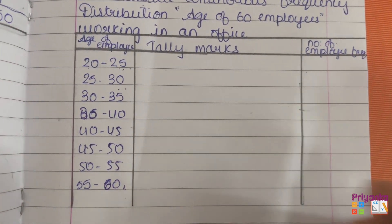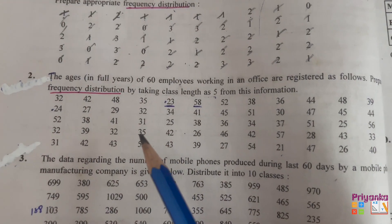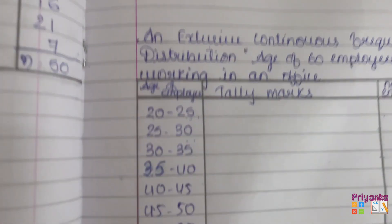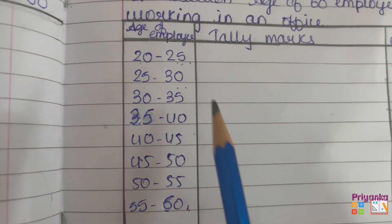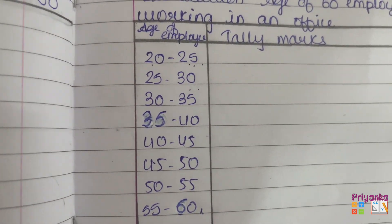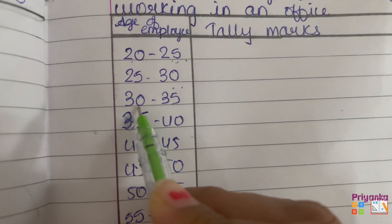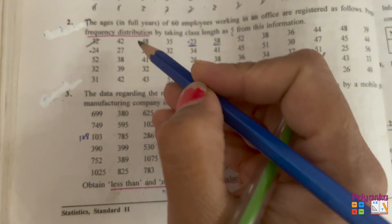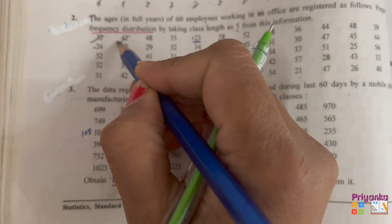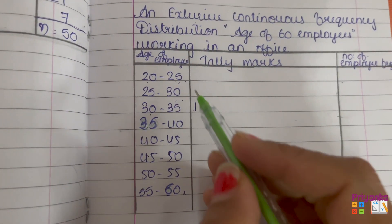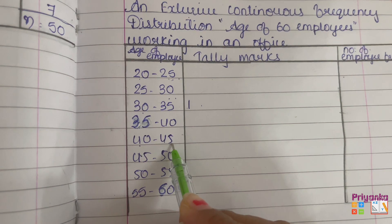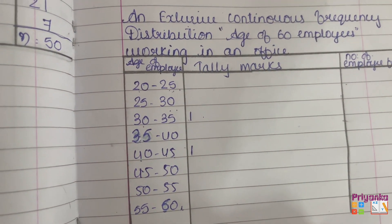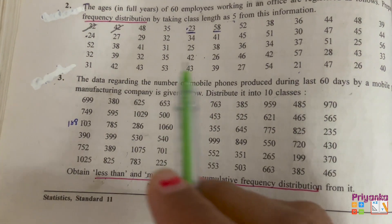Now we start the tally marking. The first number is 32. We find which class it belongs to — 32 falls between 30 and 35, so we place a mark there. The next number is 42, which falls in the class 40 to 45, so we place a mark there.